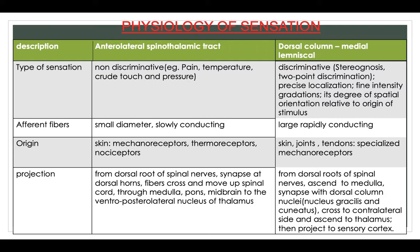Regarding the origin of each tract: in the anterolateral spinothalamic tract, you have the skin, mechanoreceptors, thermoreceptors and nociceptors. In the dorsal column, the origin is the skin, joints, tendons and specialized mechanoreceptors.